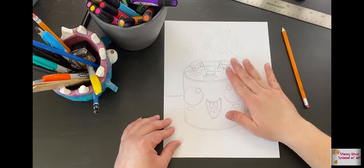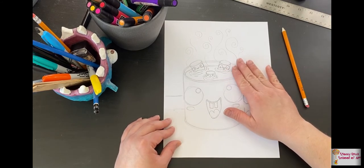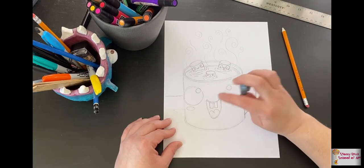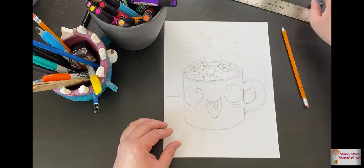Okay. I'm going to use my black marker to trace my drawing. Then I'm going to use my eraser to erase. So we always trace, we erase, and then I'm going to color and I'll see you back.